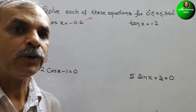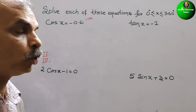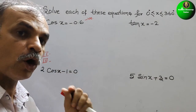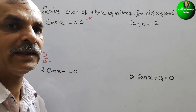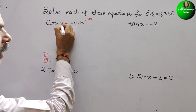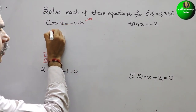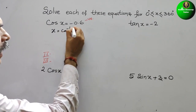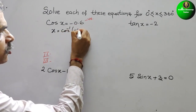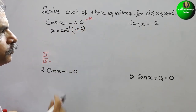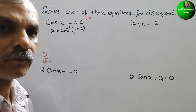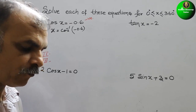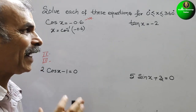Next, what we have to do: we have to convert cos to cos inverse. That means we have to find out the value of x. So x = cos⁻¹(-0.6). So here what we have to do, we can use the calculator.